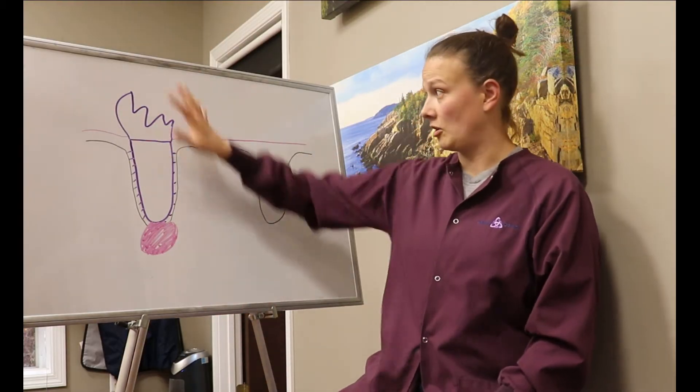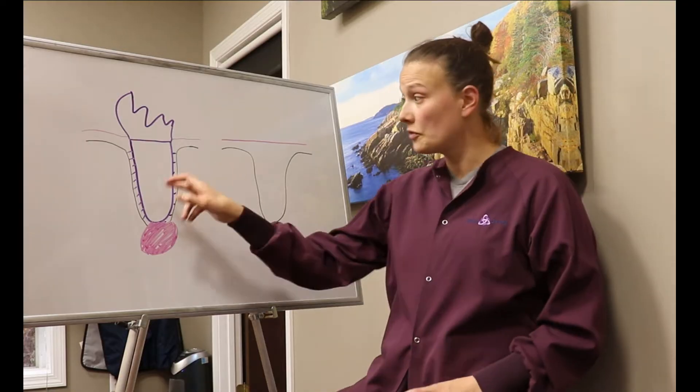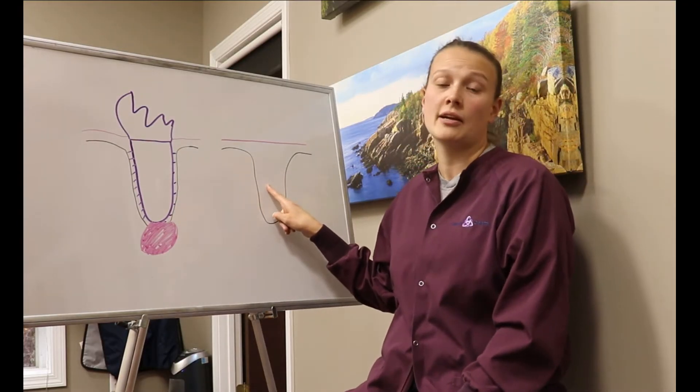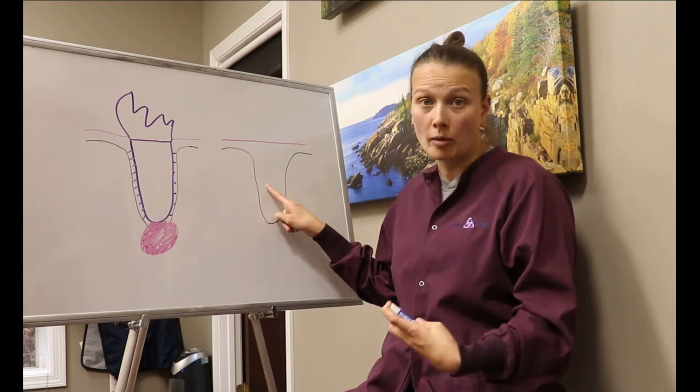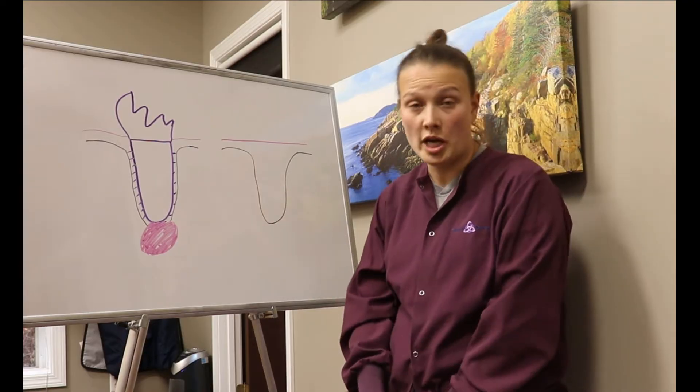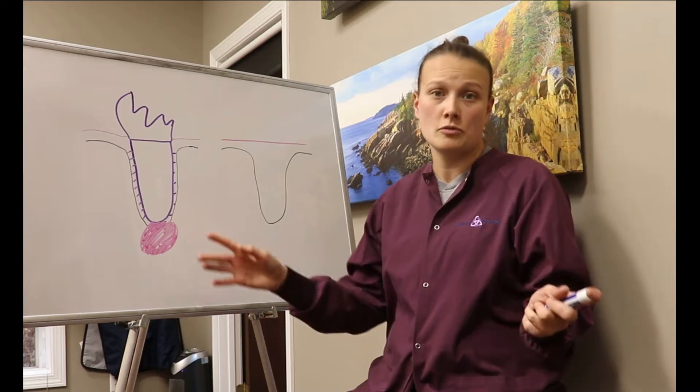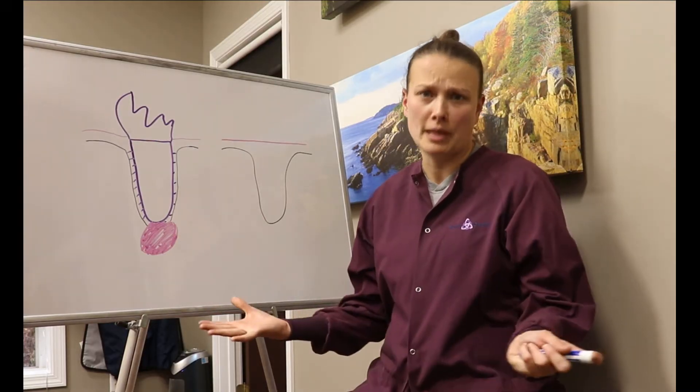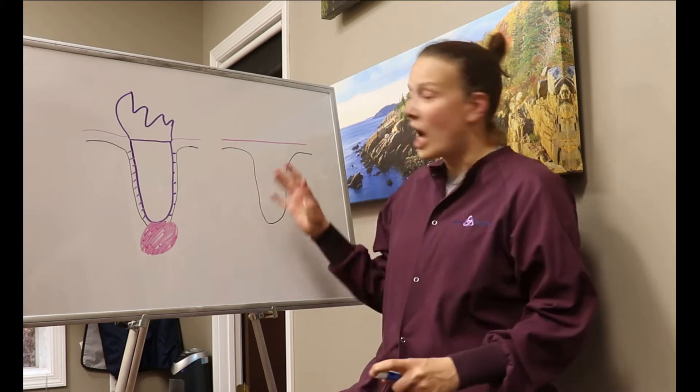When the tooth comes out there is a hole that is left in the area where it was removed from. This is called an extraction socket. For those who don't care what its real name is, it's a hole. Let's be honest here.